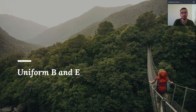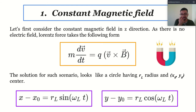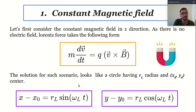Trajectory of a particle in uniform magnetic and electric field. Let's consider a scenario where the magnetic field is constant in the Z direction. And as the electric field is zero in this scenario, our Lorentz force takes the following form where the E vector is zero. Now, if you solve this differential equation, you will get this type of solution, and if you notice carefully, these are the equations of a circle.